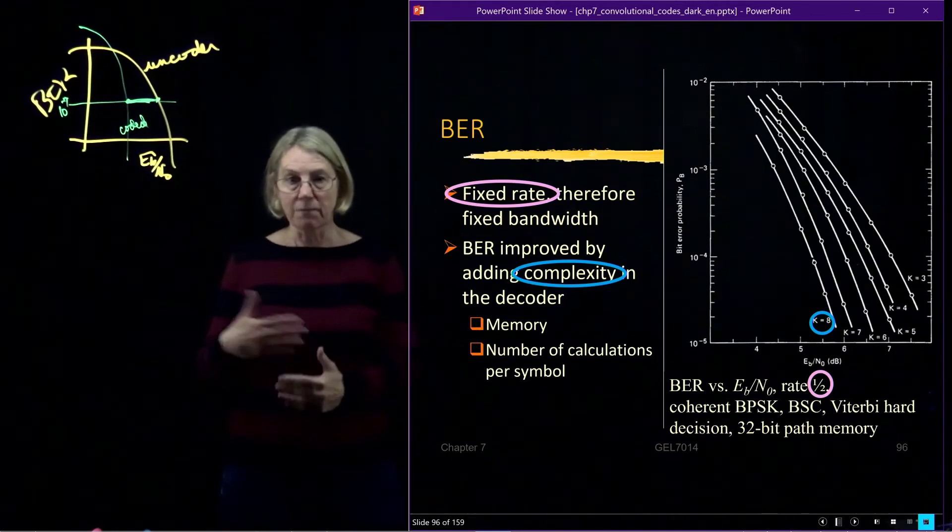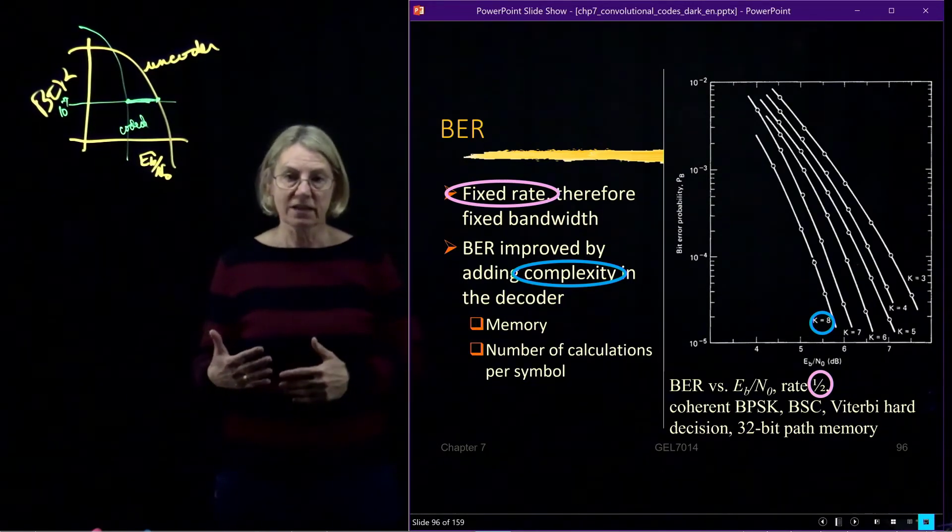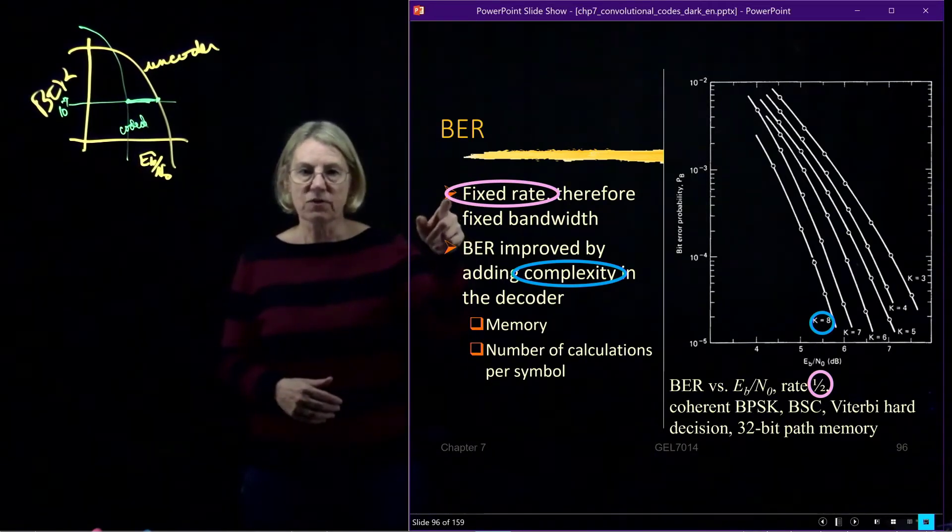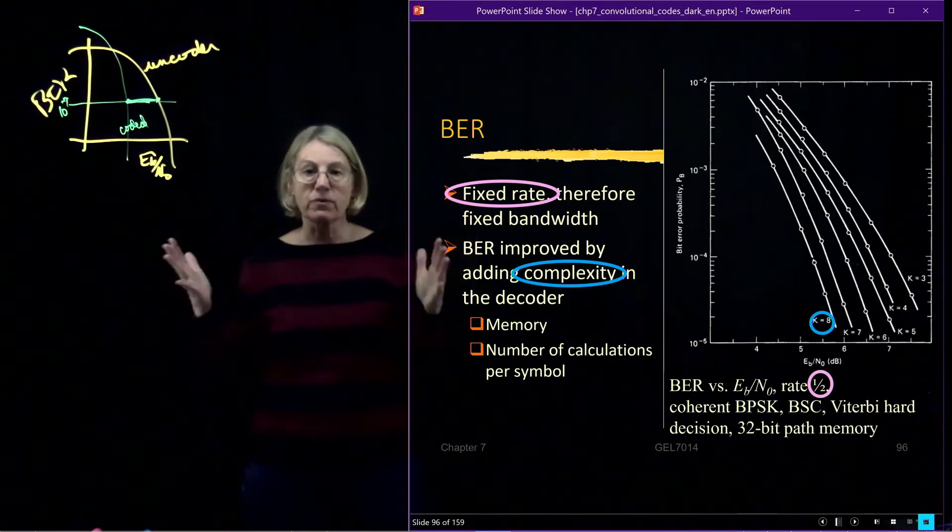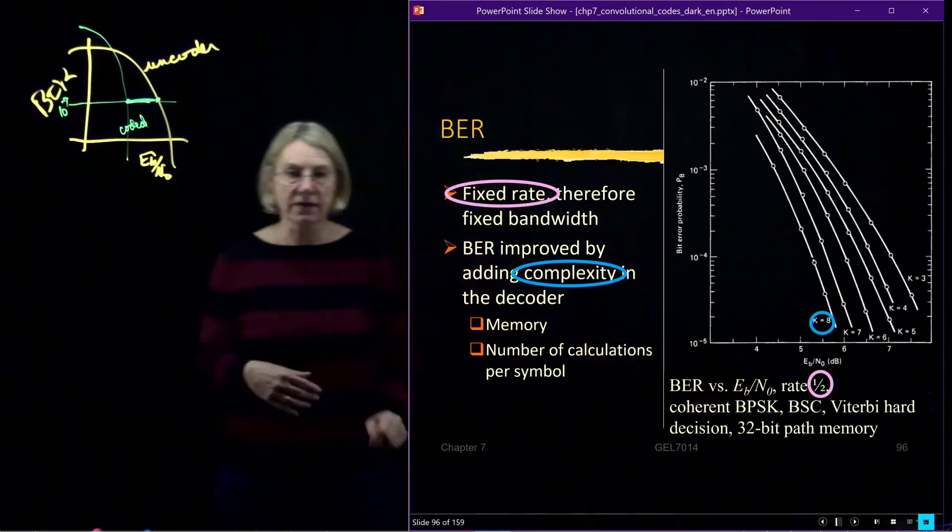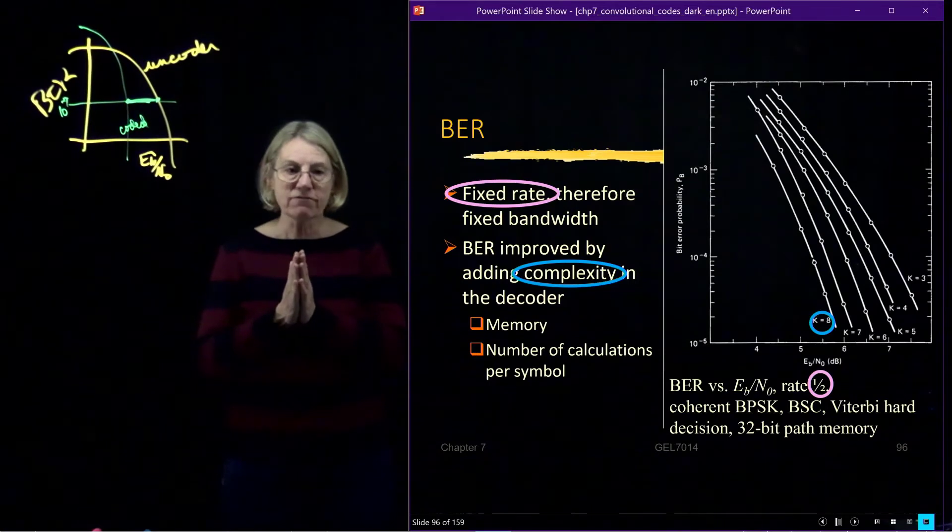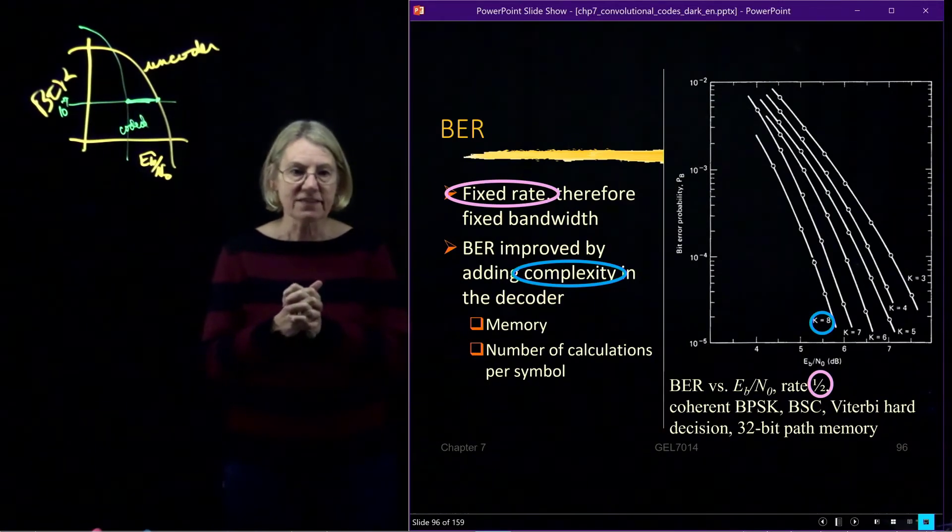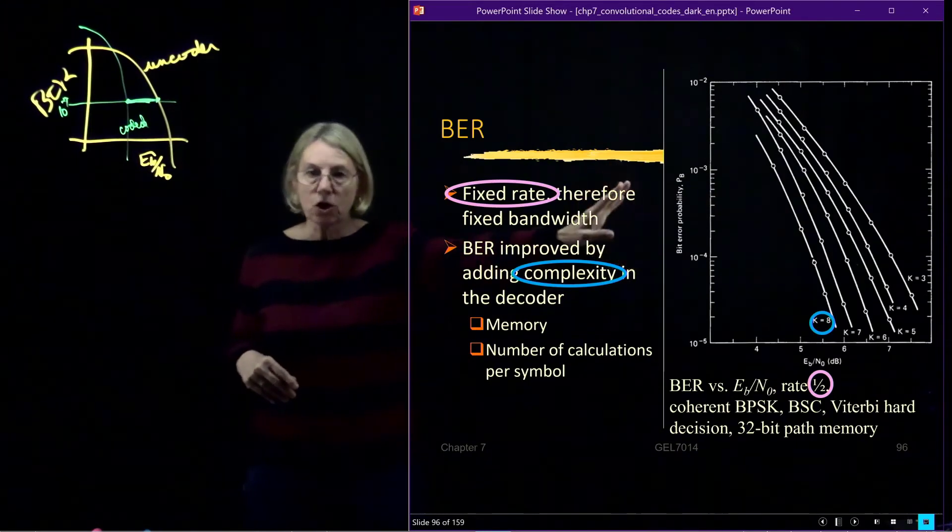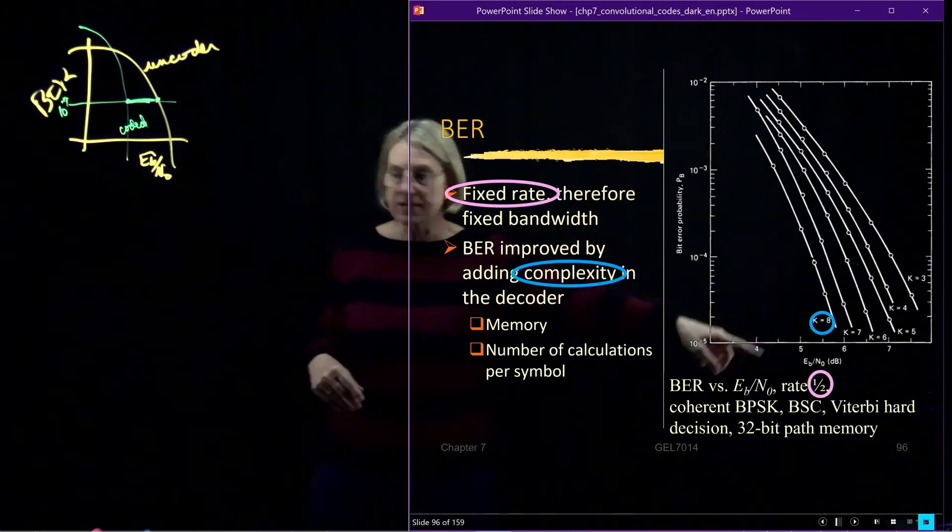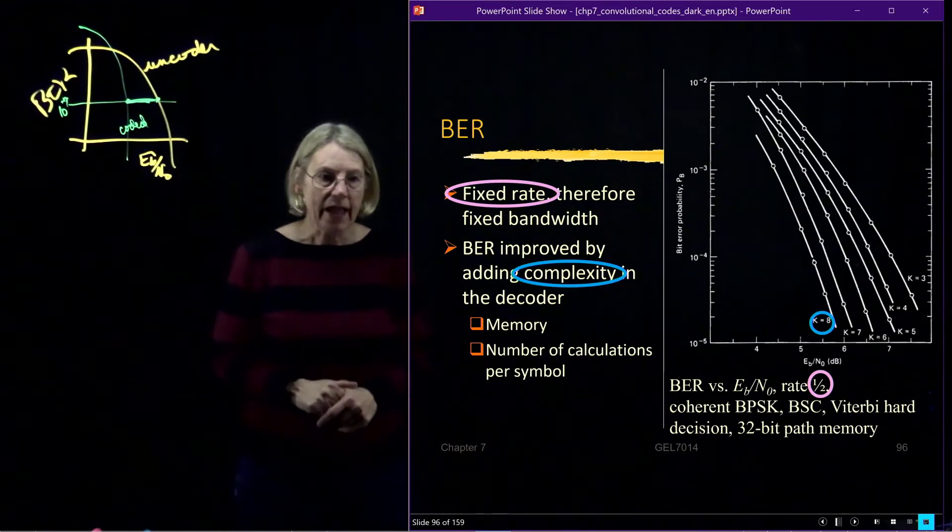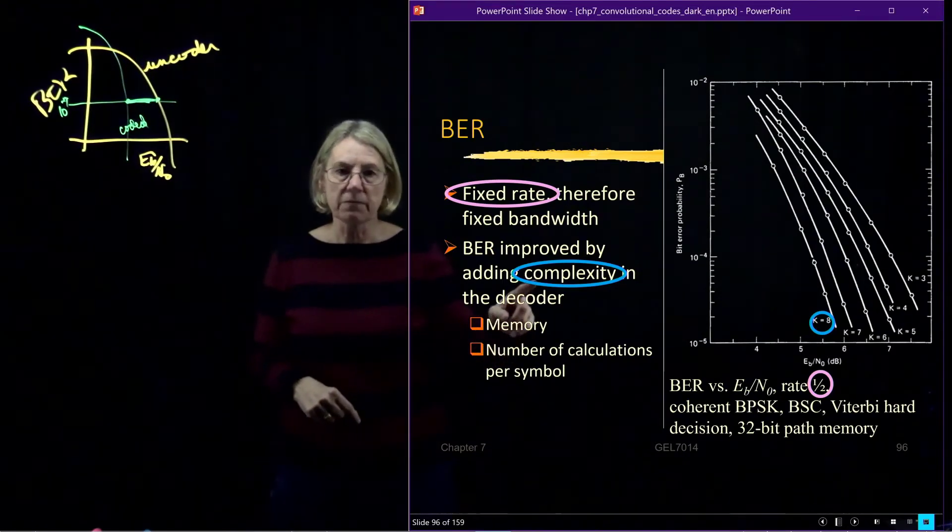So another way that we could take a cut at how performance is increasing, and the trade-off you're making in terms of complexity and gain, is in this case to fix the rate. So when I say fix the rate, I mean fix the bandwidth expansion factor. And here we'll take an example where that bandwidth expansion is one-half. And we're going to take, in this case, we're going to plot the bit error rate after coding versus Eb over N0. So we're looking at this coded performance.